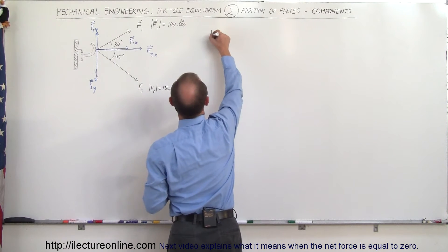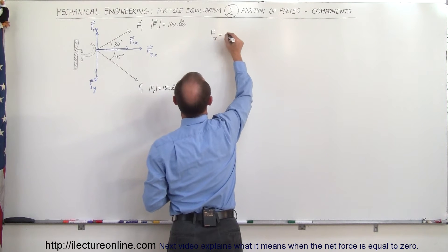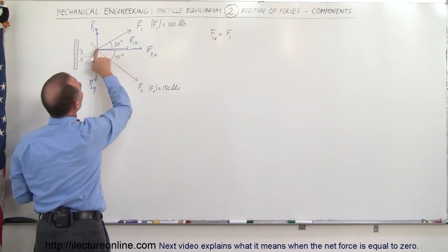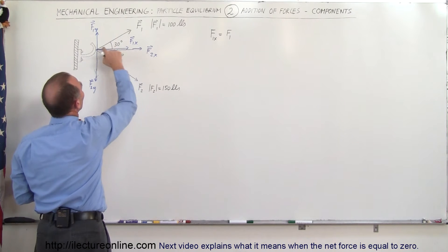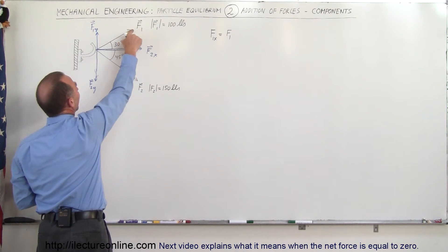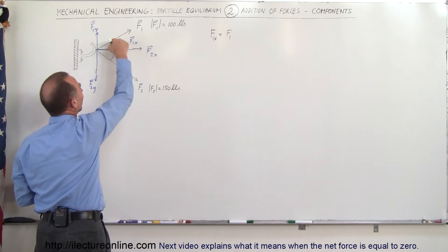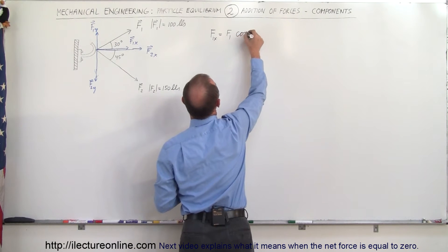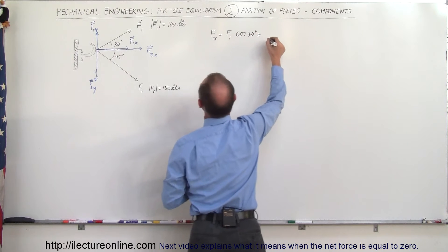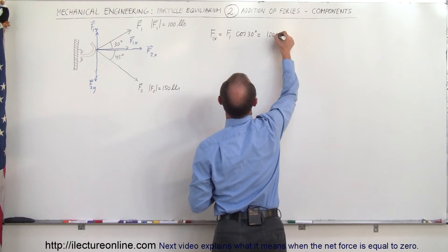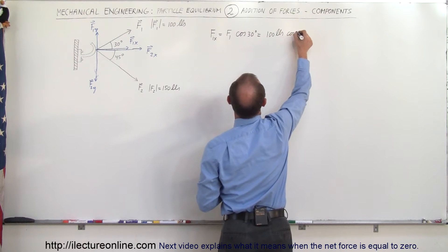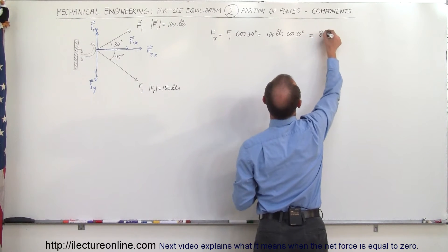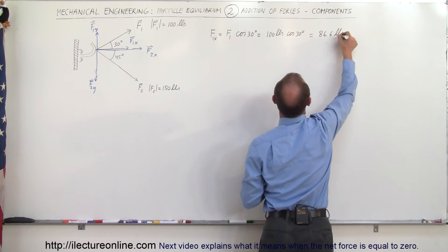First of all, F1 in the X direction — the magnitude of that is equal to F1 times the cosine of 30 degrees. Notice that since this is the adjacent side relative to the hypotenuse, and that's the angle between them, this is F1 times cosine of 30 degrees, which is 100 pounds times cosine of 30 degrees, which is 0.866, so this would be equal to 86.6 pounds.